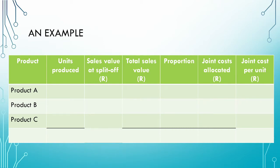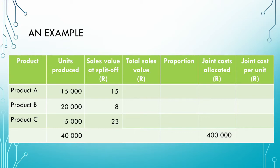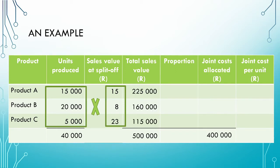Looking at the table, we can fill in the information we already have: the units produced for each joint product, the sales value at split-of-point per unit, and the total joint costs to be allocated. What we now need to do is calculate the joint costs allocated to each product. To do this, we first calculate the total sales value at the split-of-point for each product. We simply take the number of units produced in the first column and multiply it by the sales value at the split-of-point in the second column. Totalling these, we arrive at a total sales value at the split-of-point of 500,000 Rand.